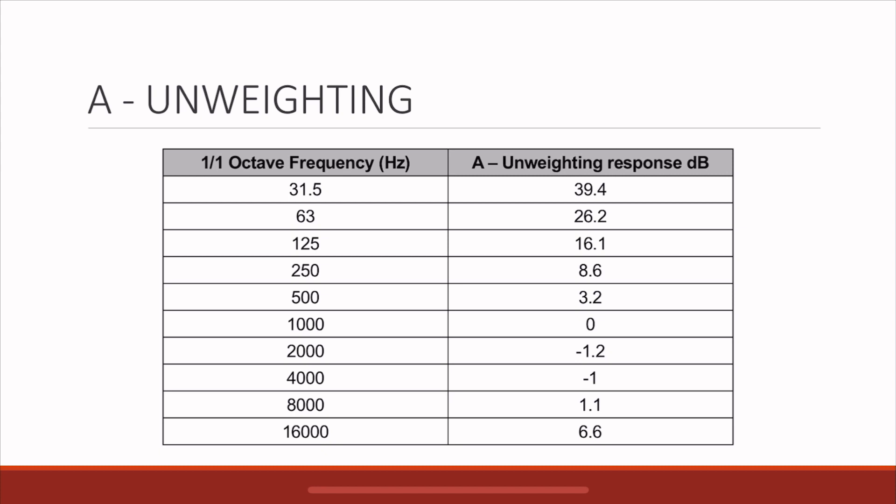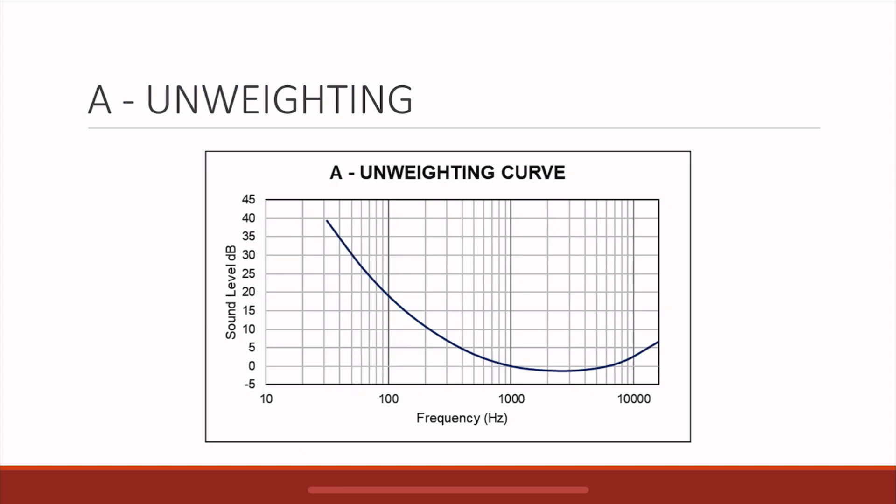To unweight, you simply do the opposite. You change the positives and negatives. This is how the unweighting curve looks like. It may not be used everywhere, but if you want to use it, it's present. You amplify the bass and cut down the 2k to 5kHz.